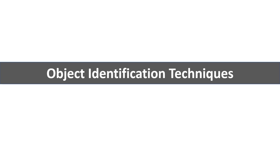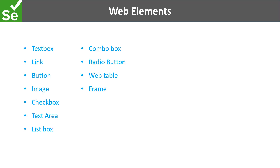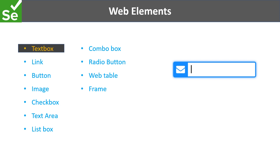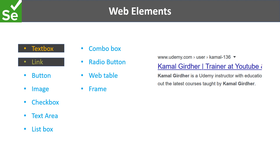Anything that is present on a web page — a button, a link, or anything — is known as a web element. The first type of element is a text box. You must be familiar with login screens where you have username and password fields where you can enter something. That is a text box. Links — you are familiar with those if you go to Google and type something and see hyperlinks in the results. On click of that you would be redirected to some other page.